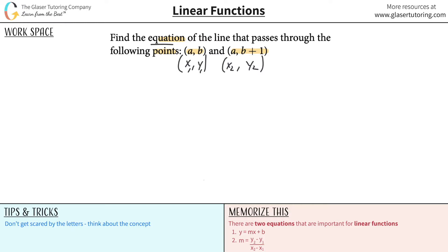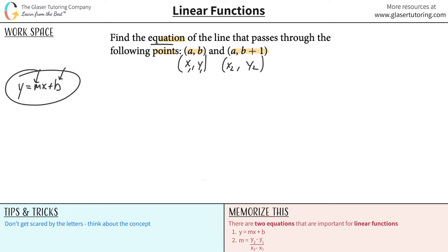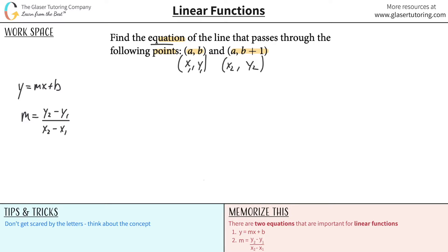Now if you have to find the equation of a line, the general equation is y = mx + b. A linear equation is defined by its slope and its y-intercept. So whenever they ask you to find an equation for a line, they mean: find the slope, find the y-intercept, and plug it into that formula. So first, let me focus on the slope. The slope formula is (y₂ - y₁) / (x₂ - x₁).